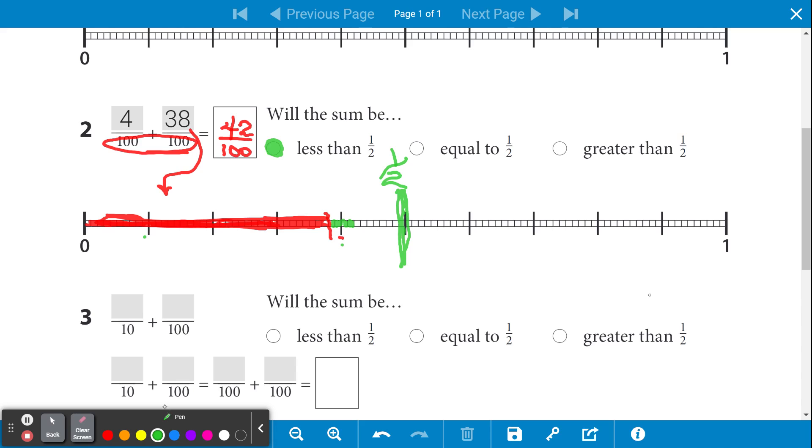Also, if you did it slightly different and you put the fractions on this number line in the order that we have them here, you would have colored 1, 2, 3, 4 of these. And then from there, you would color 38.